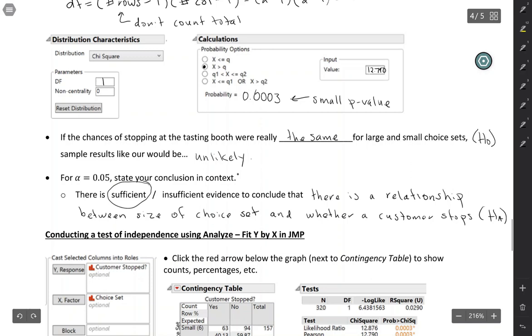So you can calculate the chi-squared statistic by hand and then use a distribution calculator to get the p-value. A little bit faster way is just to let JMP do all of it for you in analyze fit y by x. We've actually already seen this because this is how we made our two-way tables and our mosaic plots. But I'll show you one more time.